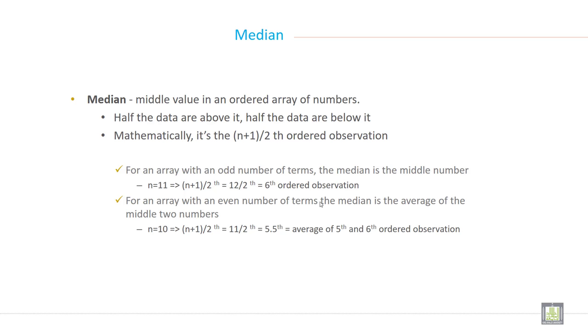Median is a middle value in an ordered array of numbers. Half the data are above it and half the data are below it. You can say the right side and left side, just equal numbers are right side of that data and equal number are left side of that data. Mathematically it is the (n+1)/2 th ordered observation. The observation must be in order.